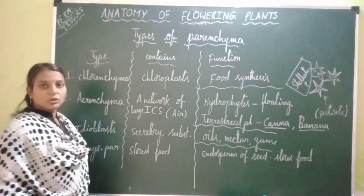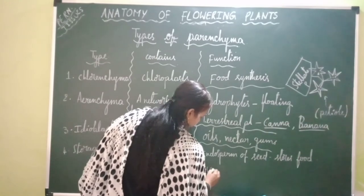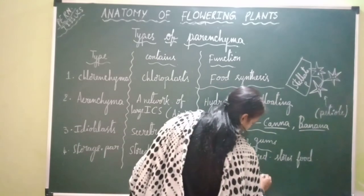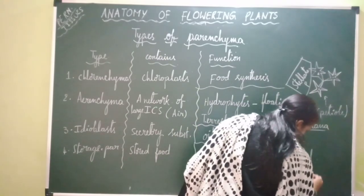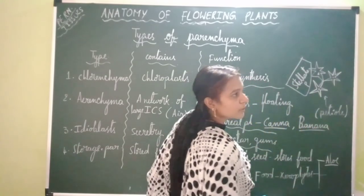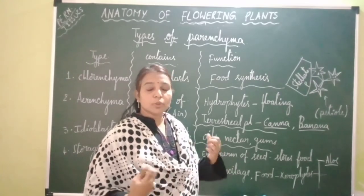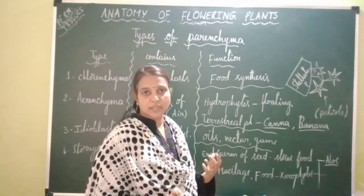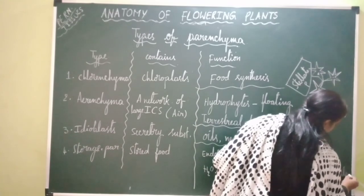Storage parenchyma is also present in some xerophytes which store water, mucilage, and food. For example, xerophytic plants like opuntia and aloe store water in the form of mucilage. During the rainy season, they absorb a large amount of water and store it as mucilage, which they utilize during the summer season.